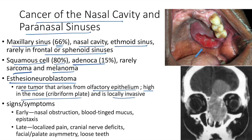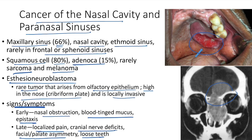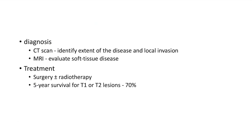Early clinical features of nasal cavity and paranasal sinus cancer include nasal obstruction, blood-tinged mucus, and epistaxis. Late features include localized pain, cranial nerve deficits, facial and palate asymmetry, and loose teeth. Diagnosis: CT scan to identify extent and local invasion; MRI to evaluate soft tissue disease. Treatment is surgery with or without radiotherapy; 5-year survival for T1 or T2 lesions is around 70%.